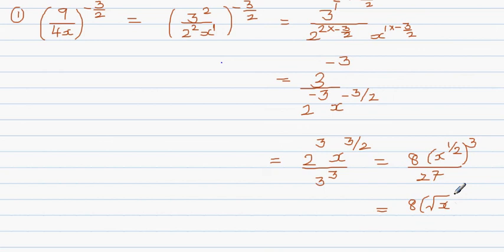x to the power half is square root of x, so the simplified form is 8 times square root of x to the power 3 over 27. This is the simplified form in surd form.